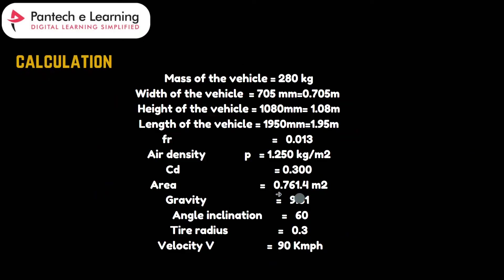Now we will do the calculation with one example. I am taking the mass of the vehicle as 280 kg, width as 0.705 m, height as 1080 mm. We also have length, friction coefficient, air density, rolling coefficient, drag coefficient CD, area, gravity, and angle of inclination as 6 degrees. Next we have the tire radius and velocity. Using these values, we can perform dynamic calculations to determine various factors such as rolling resistance force.